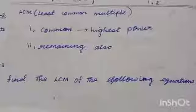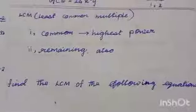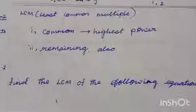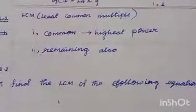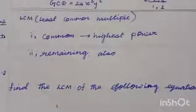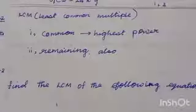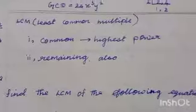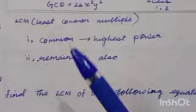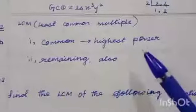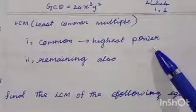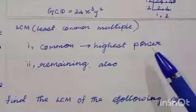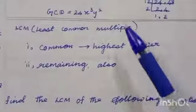Students, you have already learned LCM and GCD in lower classes for numerals. Now you are going to learn LCM for algebraic expressions. The hint is: find the common highest power of each variable and also include the remaining variables with their highest powers.